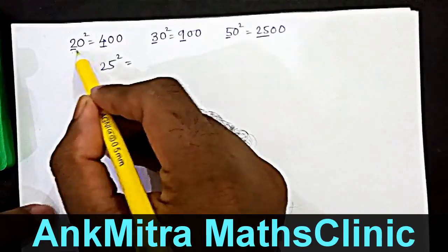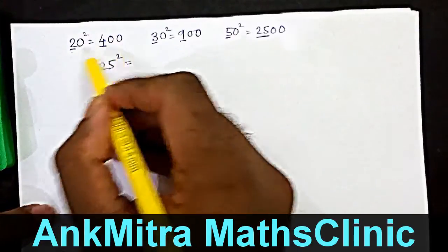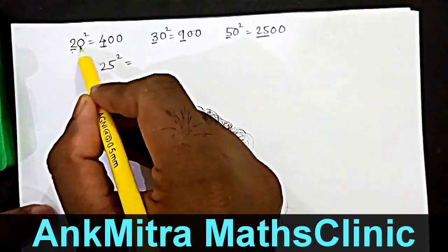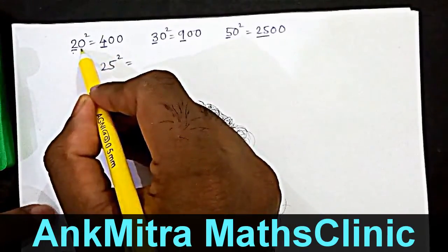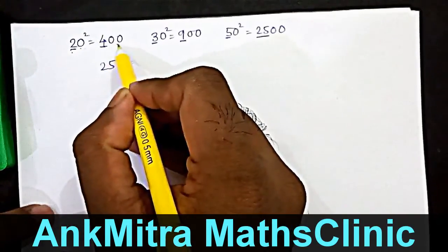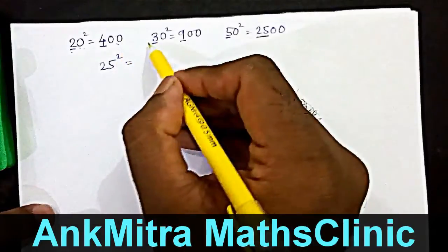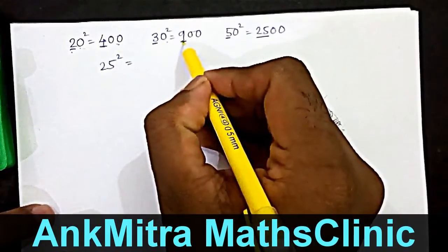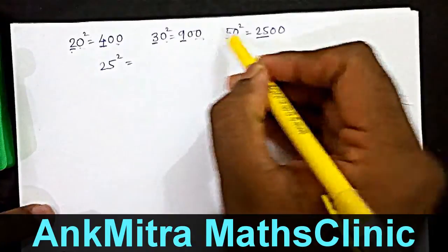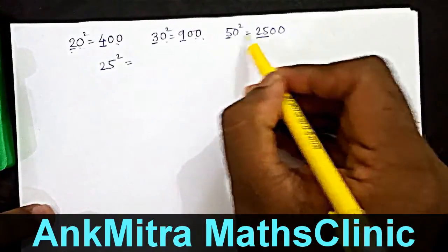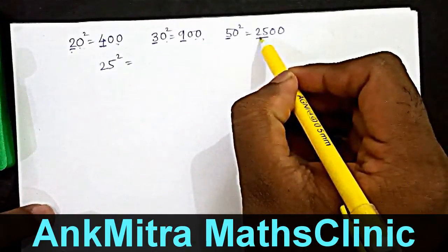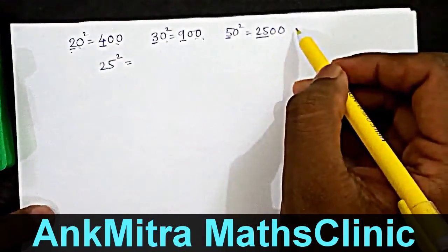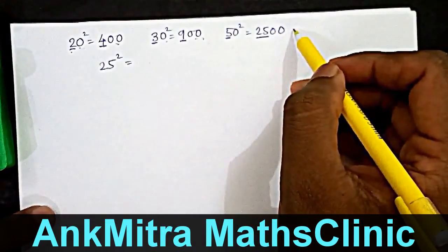We all know 20 squared will be 400. The trick is: the square of two is four, and since there is one zero in this number, there will be two zeros in its perfect square. Similarly, 30 squared will be three squared followed by two zeros. 50 squared will be five squared — twenty-five — followed by two zeros. In similar fashion we can write down the squares of all round numbers.